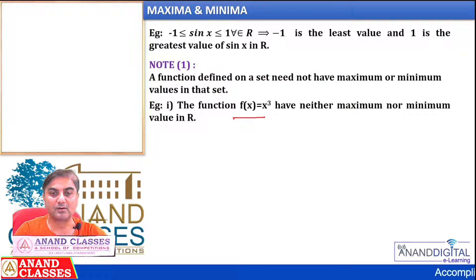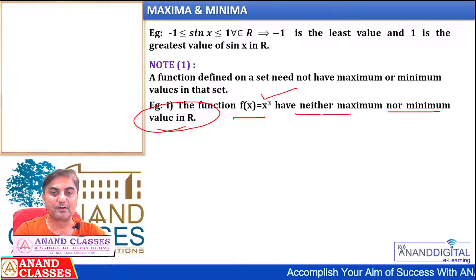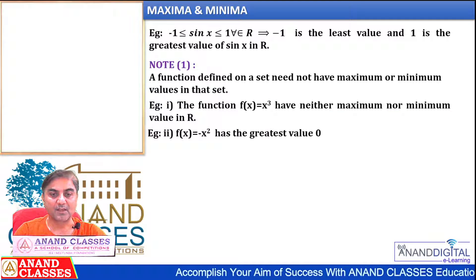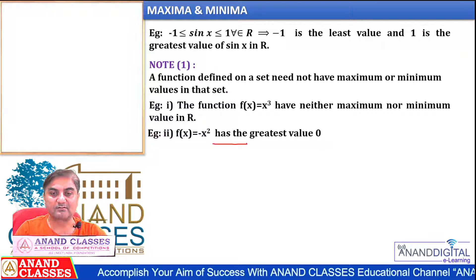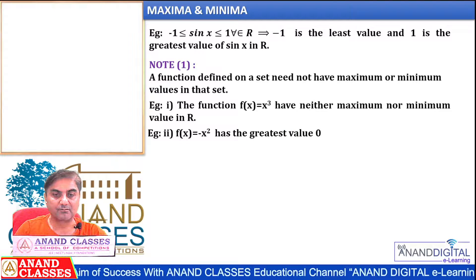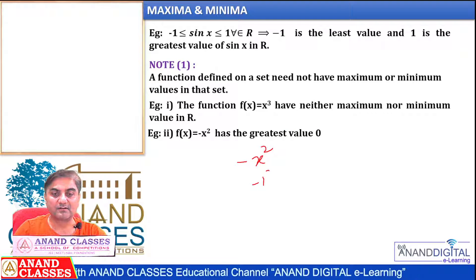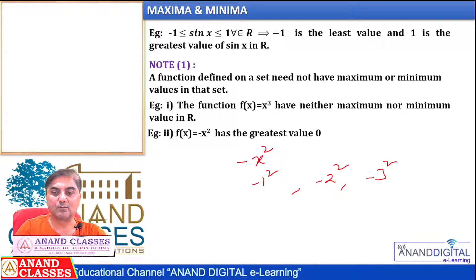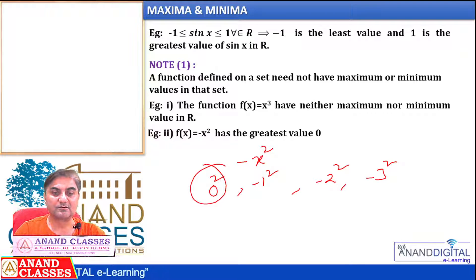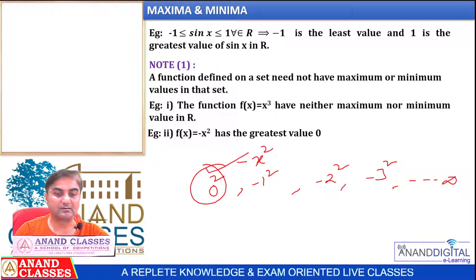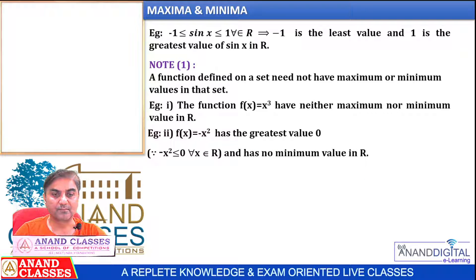For example, f(x) = x³ has neither maximum nor minimum value in real numbers R. Another example: f(x) = -x², values like -1², -2², -3² are all negative, and at x=0 the value is 0. So it has maximum value 0, but -x² ≤ 0 means it has no minimum value in R.